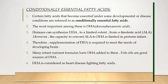Let us see what conditionally essential fatty acids are. Certain fatty acids become essential under some developmental or disease conditions and they are referred to as conditionally essential fatty acids. The most important among these is DHA — docosahexaenoic acid. Humans can produce DHA but only to a limited extent; it is produced from alpha-linolenic acid, and the capacity to convert alpha-linolenic acid to DHA is limited. In case of DHA deficiency, supplementation is provided. DHA is very important for development of the brain and retina. Many infant nutrient formulas have DHA added to them, and fish oils are good sources of DHA. DHA is considered a heart-disease-fighting fatty acid.